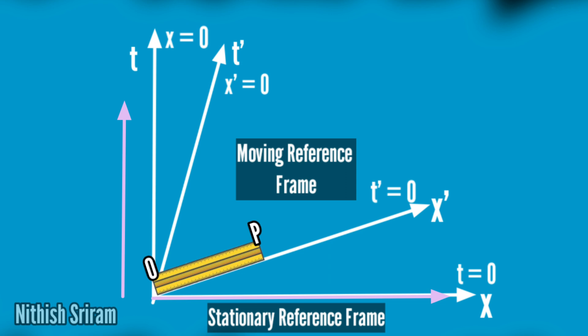That is why the meter stick's length contracts in the moving frame. After all, time and space are dimensions.